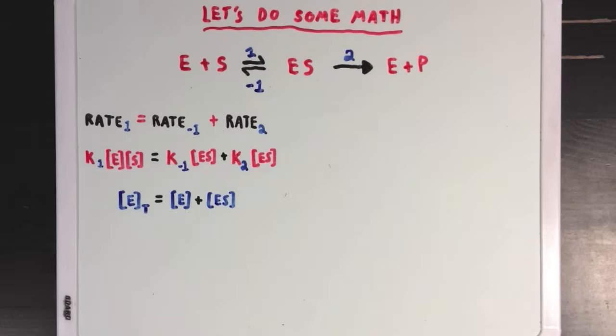Next, I'll introduce a new idea and say that the total amount of enzyme available, which we'll call ET or ETotal, is equal to the free enzyme E plus the enzyme bound to substrate, or ES. And using this equation, I'm going to rewrite the E on the left side of our equation as the total E minus the ES, which would be equal to the E we had there before.